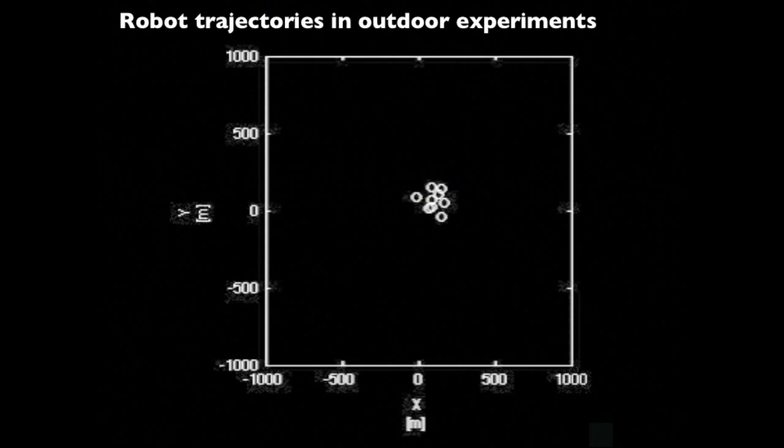In the first experiment, robots can communicate far and can make sharp turns, which means they can rapidly react. With these settings, robots converge to a coherent flock with a circular topology.